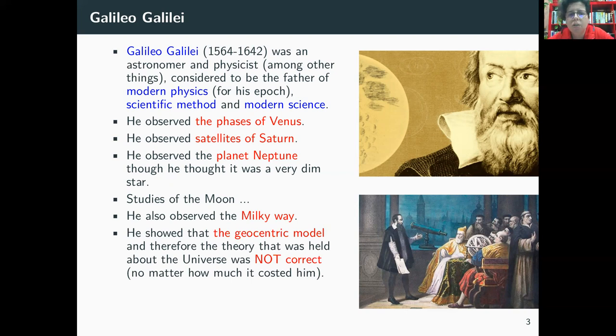Then he showed that the heliocentric model is the correct one. Why? For example, because the phases of Venus could be explained through this heliocentric model. The Ptolemaic model and its many versions could not explain the phases of Venus. Therefore, the theory that was correct for the universe is the heliocentric model. He was very important for astronomy and for cosmology.